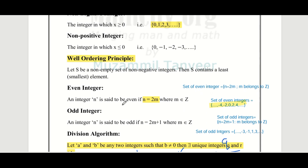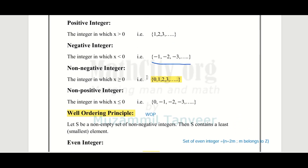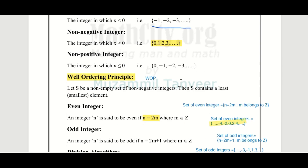Next we discuss the Well-Ordering Principle, which we abbreviate as WOP. This principle is a statement. The Well-Ordering Principle states: let S be a non-empty set of non-negative integers.